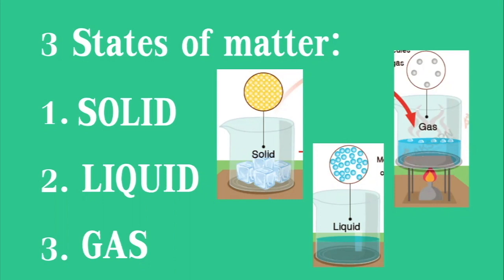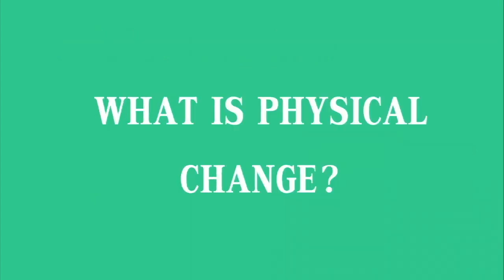Matter can change from one state to another if heated or cooled down. A change of state of matter is a change from one state of matter to another. Temperature is important for this change. We call this kind of change physical changes. We learned that when we heat up or cool down water until certain levels, it will change from one state of matter to another. These changes are reversible.